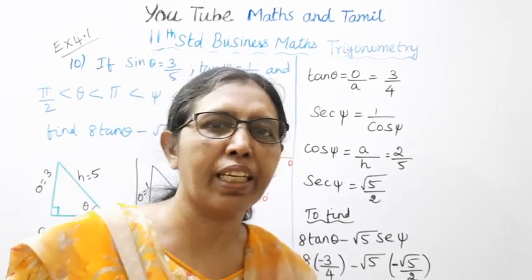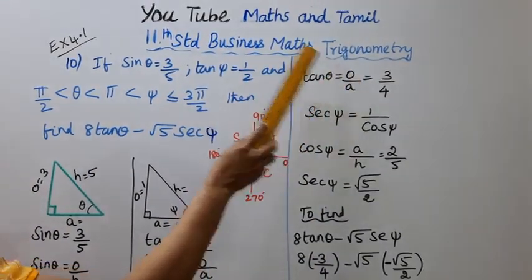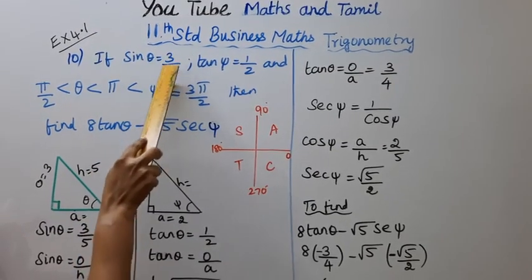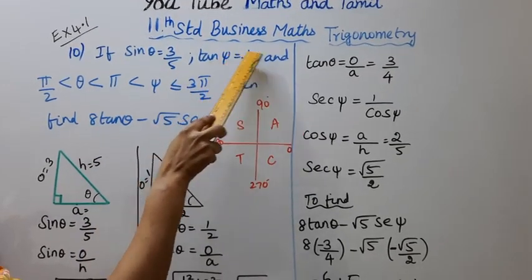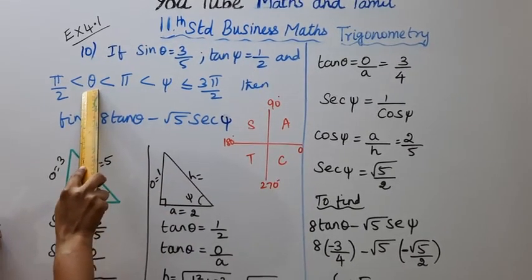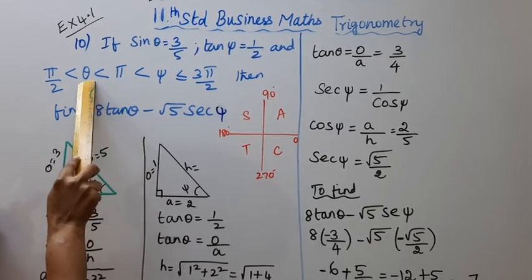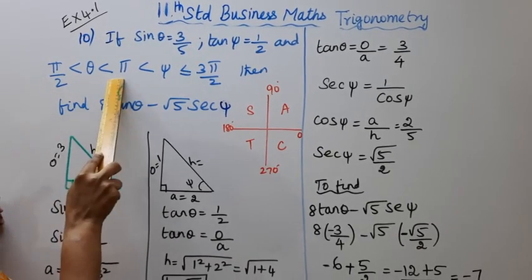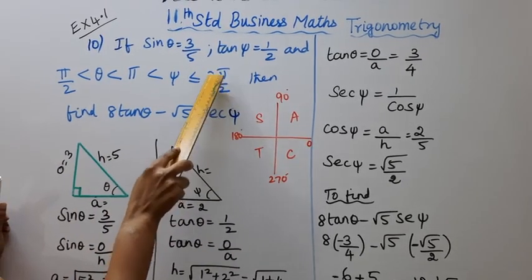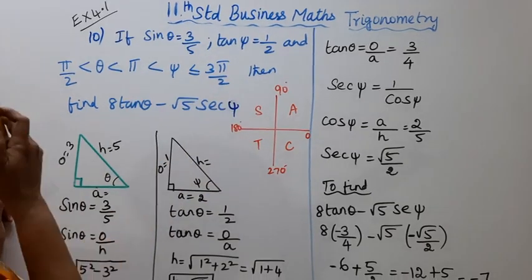Hello students, welcome to Max and Tumble channel. 11th standard Business Math, Trigonometry, Exercise 4.1, Problem 10. Given: sin θ = 3/5, tan φ = 1/2. θ lies between 90° to 180°, and φ lies between 180° to 270°.